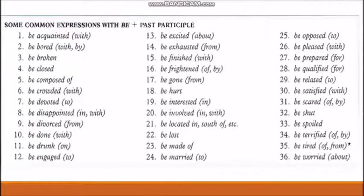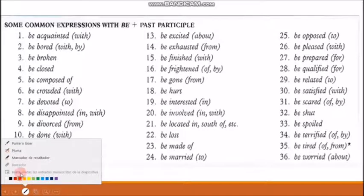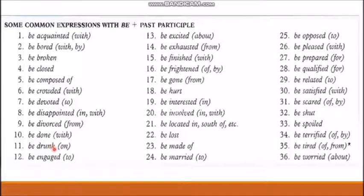We have: be acquainted, be bored, be broken, be closed, be composed of, be crowded, be devoted, be disappointed, be divorced, be done, be drunk, be engaged, be excited, be exhausted, be finished — each of these verbs has a preposition shown at the end of it.